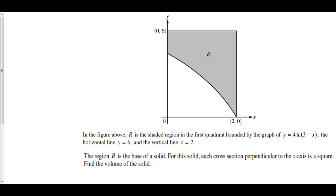In the figure, R is the shaded region in the first quadrant bounded by y equals 4 times the natural log of 3 minus x, the horizontal line y equals 6, and the vertical line y equals 2. The region R is the base of a solid. For this solid, each cross-section perpendicular to the x-axis is a square. Find the volume of the solid.